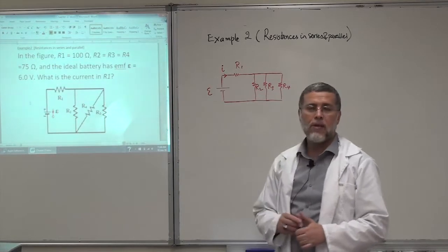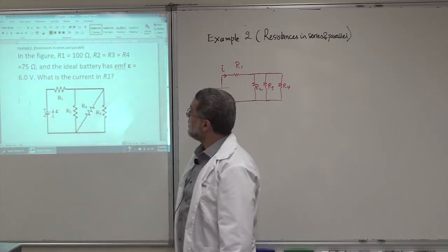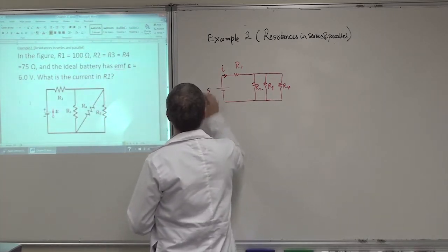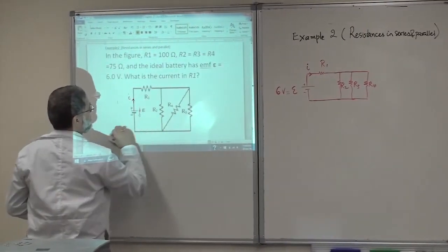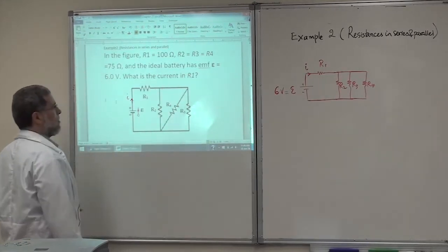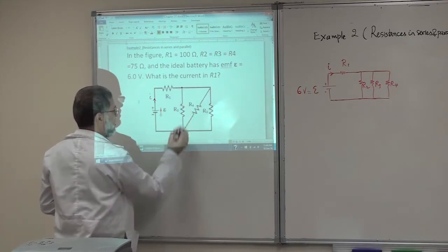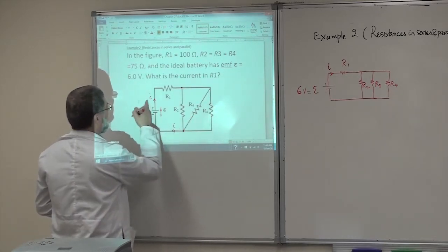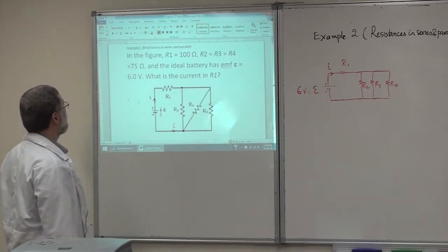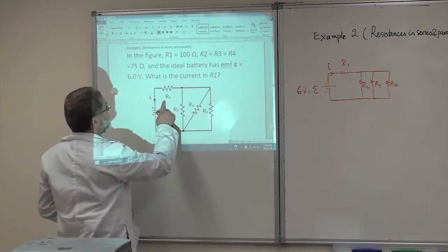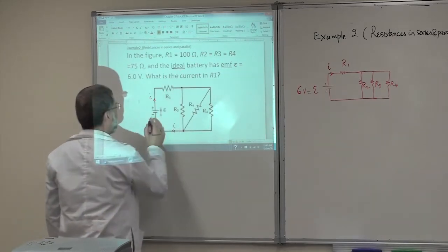Now another example related to capacitors in series and parallel. We have a battery with an EMF of 6 volts. The current goes from the battery through a resistor, reaches a junction, and separates — a current goes through each resistor — then they join at another junction, and the same current I returns through the battery. The battery is ideal, meaning no internal resistance.